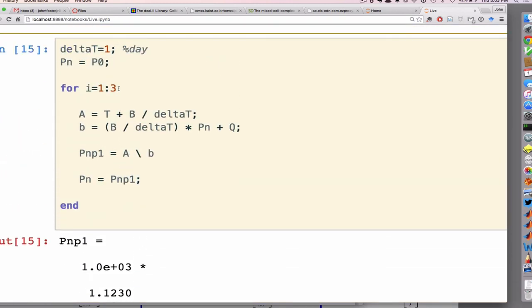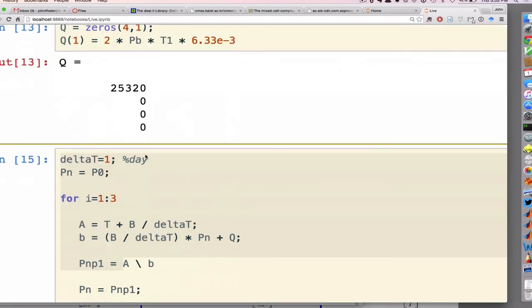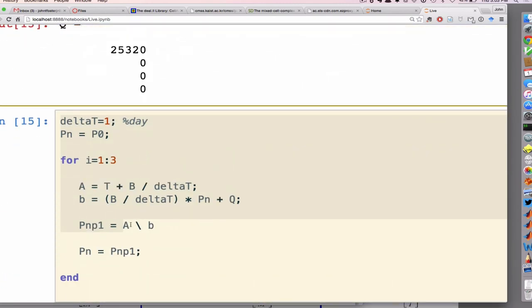Is this implicit or explicit? Implicit. This A backslash B is a linear solve. So I'm solving, it's like doing the inverse of A times B.